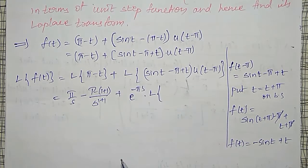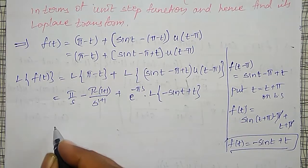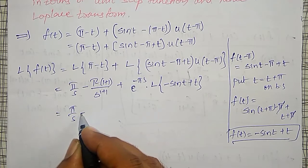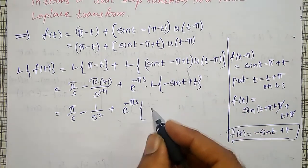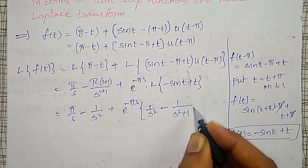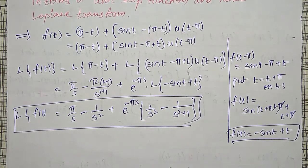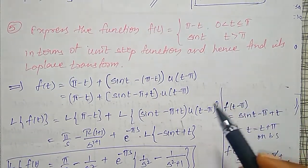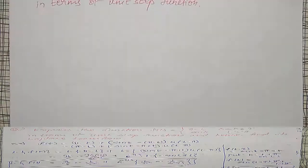Therefore the Laplace transform is: π/s − 1/s² + e^(−πs) · L{−sin(t) + t}. This equals π/s − 1/s² + e^(−πs) · [1/s² − 1/(s²+1)]. This is the Laplace transform of the function expressed as a unit step function. Using the definition directly would require splitting integration from 0 to π and π to ∞, making the unit step approach much simpler.